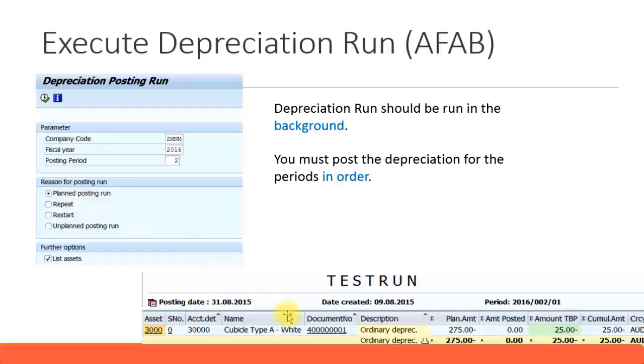When you run the depreciation, you will get information regarding the asset number, the asset class, the description, how much the planned amount, how much depreciation amount has been posted for a particular period, and so on. And the method of depreciation, which is usually the ordinary depreciation. Now let's look at actually running some depreciation for the assets you have created in your company code.